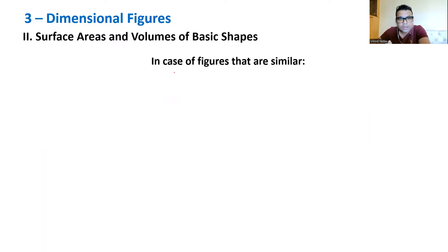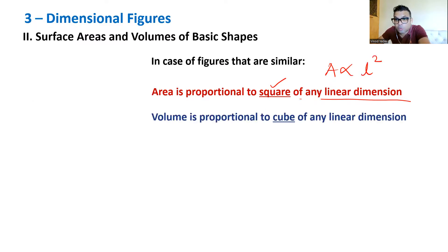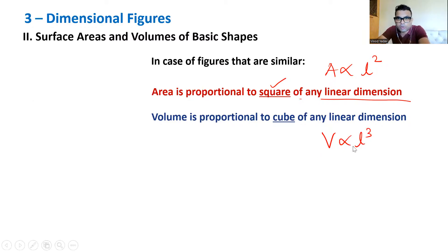A useful shortcut for similar figures: area is proportional to the square of any linear dimension, and volume is proportional to the cube of any linear dimension. Remember this — it helps solve tricky comparison questions efficiently.